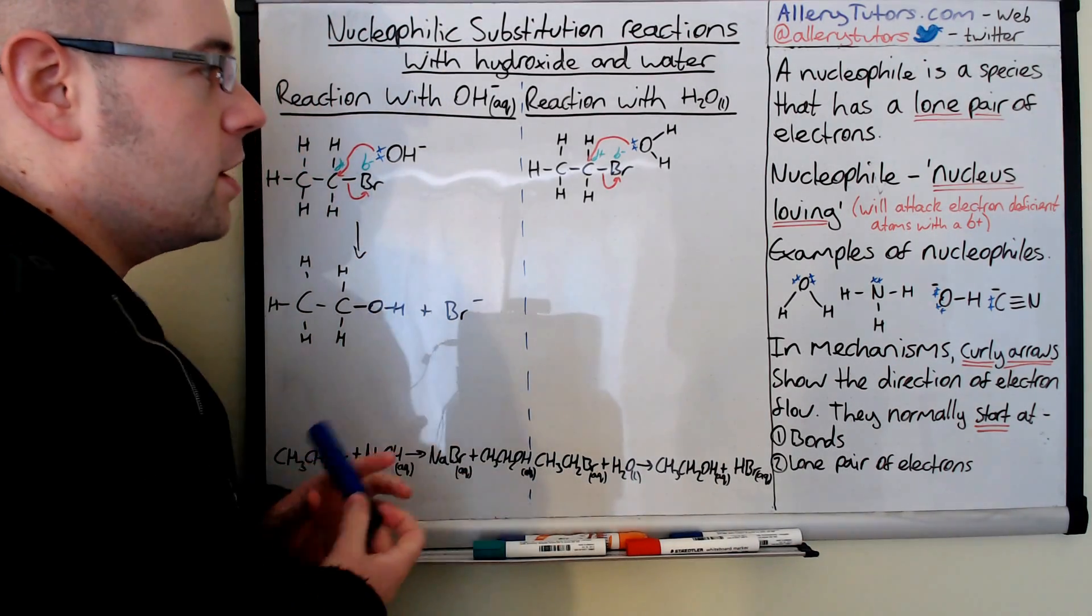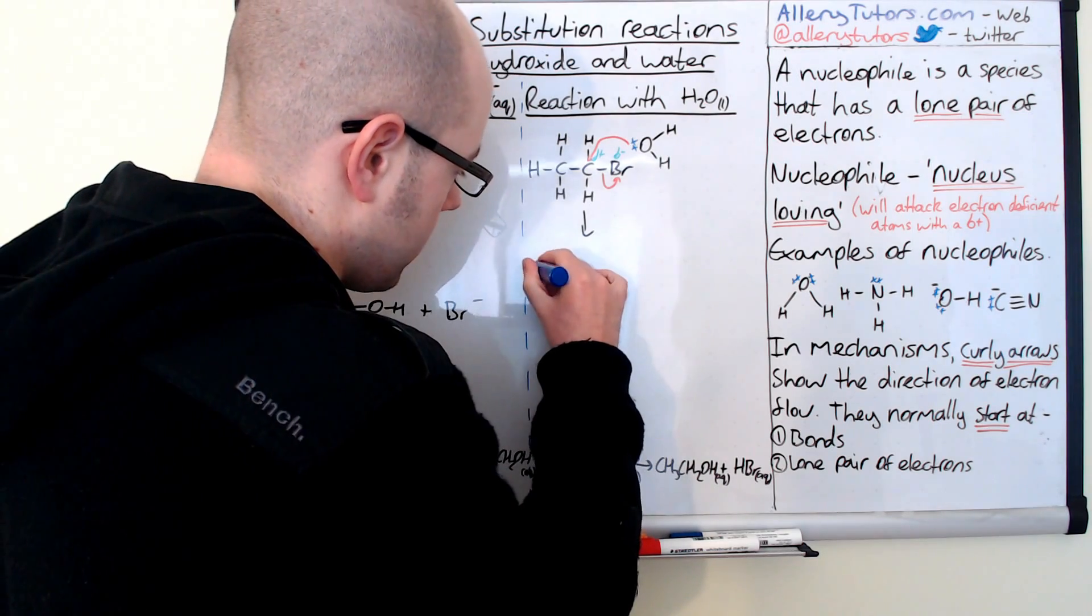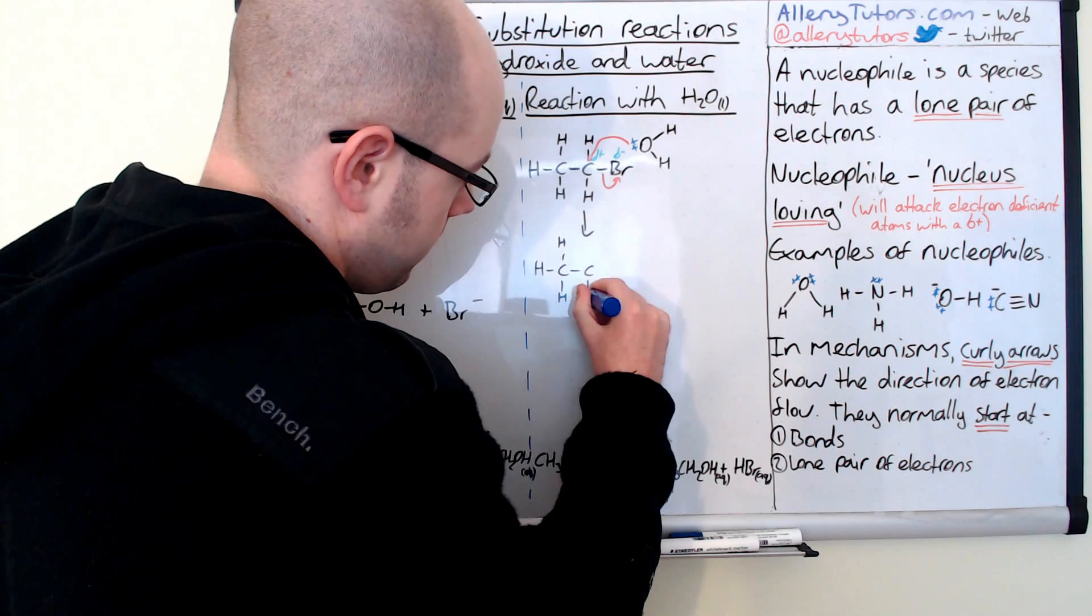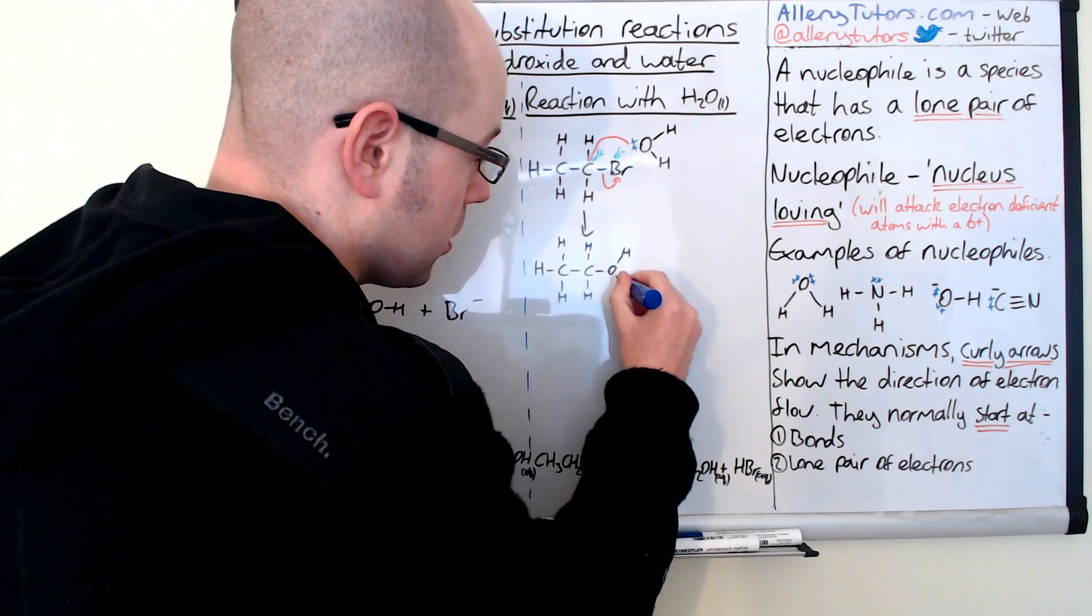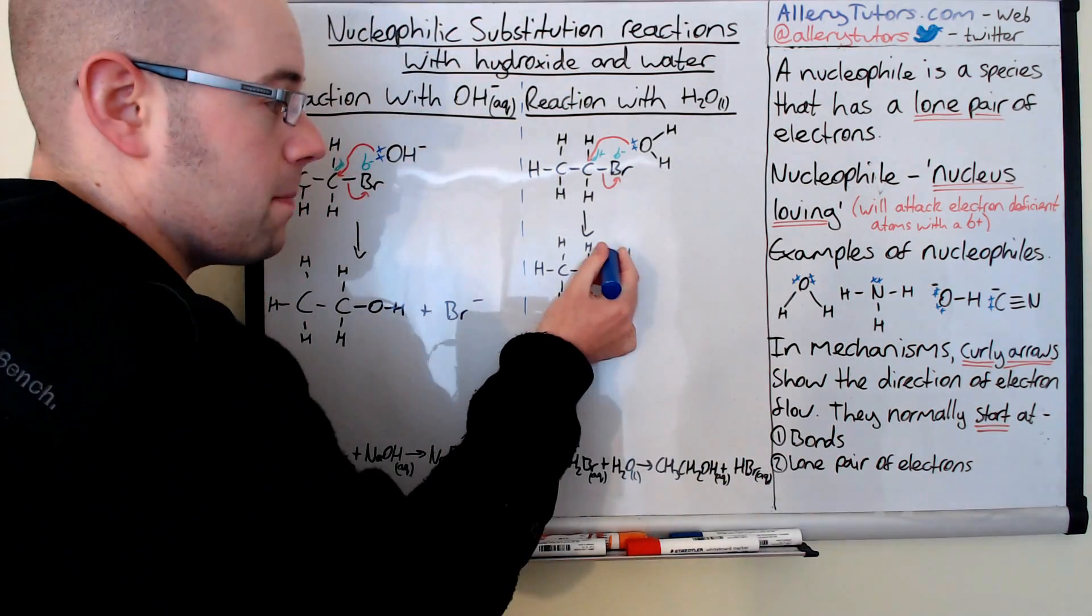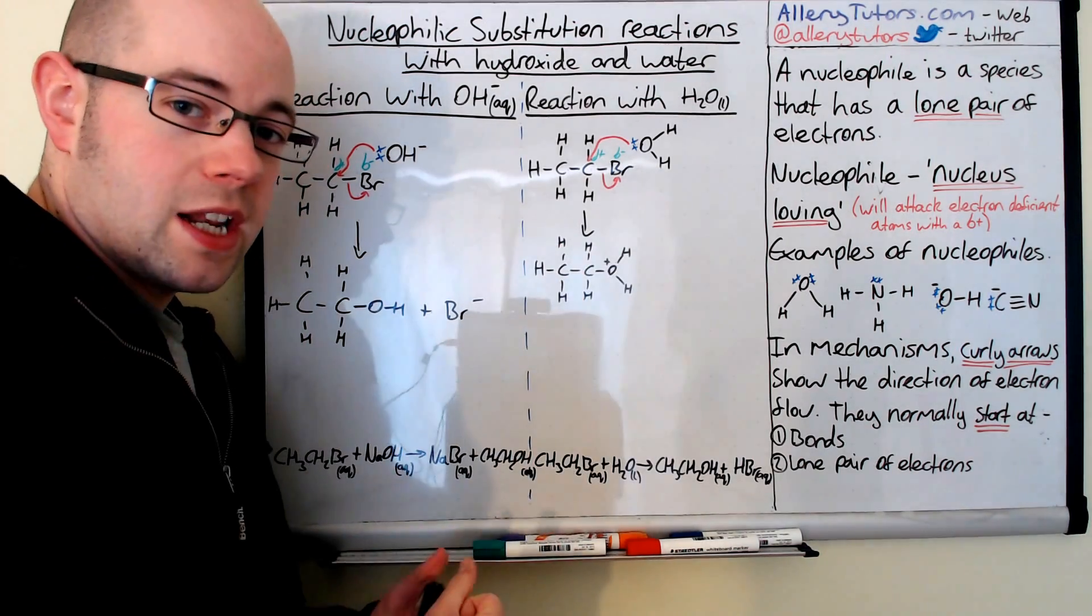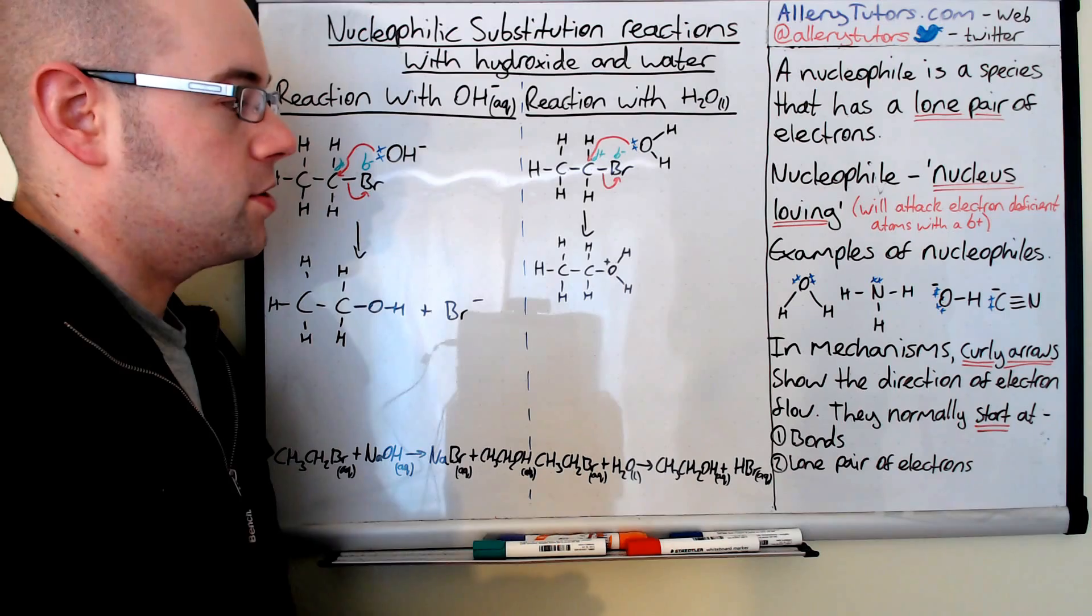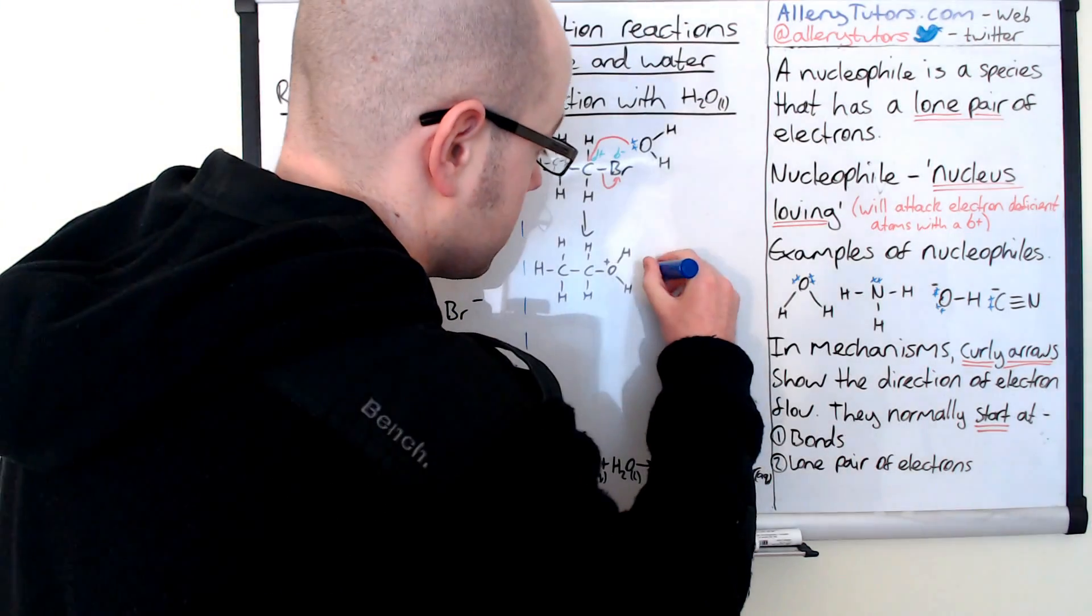Now the difference with this one is we're now going to form an intermediate. So I'm going to draw it out here. There's our two carbons, hydrogens. Now this time we've got an oxygen, but the whole water molecule has added itself onto there. And what that does is it gives it a positive charge on that oxygen because it's got too many bonds. Its electrons are being shared over too many places, so that's why it's got a positive charge. It's expected to be deficient in electrons. And we also have a Br minus as well.